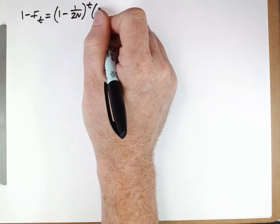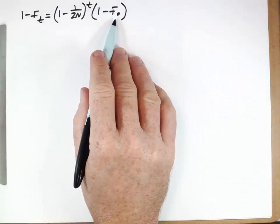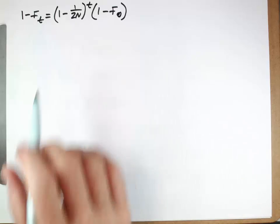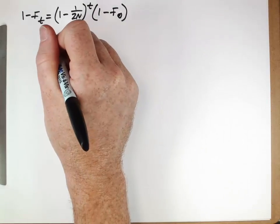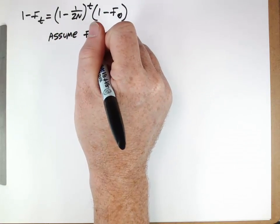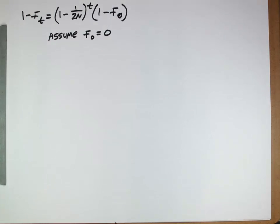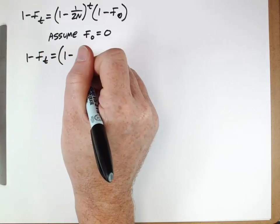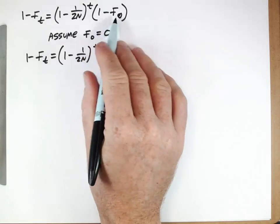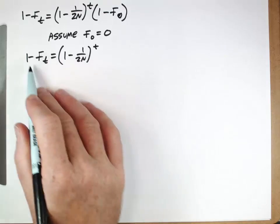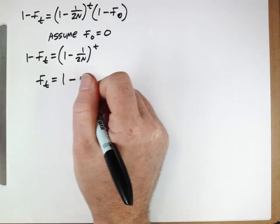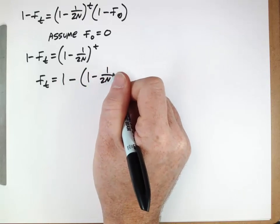So: one minus F(T) equals (one minus 1/2N)^T times (one minus F(0)), where F(0) is the initial value at generation zero and F(T) is the value after T generations. Let's simplify by assuming F(0) equals zero — starting with a population that's completely genetically variable with no alleles identical by descent. This gives: one minus F(T) equals (one minus 1/2N)^T, which rearranges to: F(T) equals one minus (one minus 1/2N)^T.